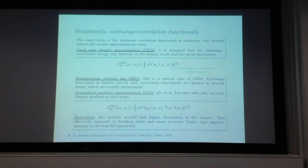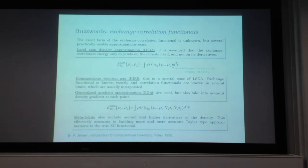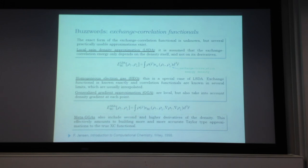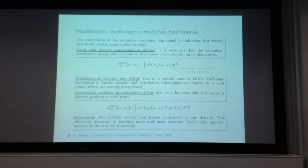Several practically usable approximations exist. The local density approximation assumes the exchange-correlation energy depends only on the local density itself, not its derivatives. The most general form is an integral over the density times an exchange-correlation energy density, which is guessed and fitted to experimental data. One analytically known case is the homogeneous electron gas, where the exchange functional is known exactly and correlation functionals are known in several limits with interpolation between them.